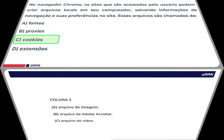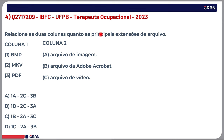Vamos para a questão de número 4. Relacione as duas colunas quanto às principais extensões de arquivos. Coluna 1: BMP, MKV e PDF. Coluna 2: arquivo de imagem, arquivo do Adobe Acrobat, arquivo de vídeo. Você vai relacionar um com o outro.